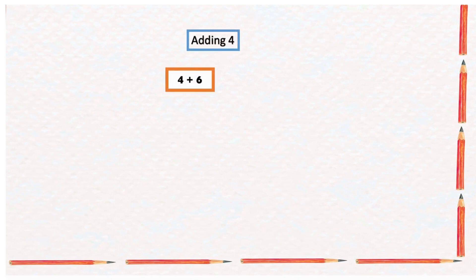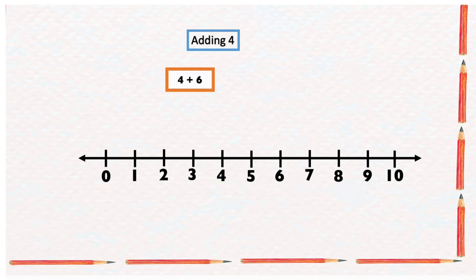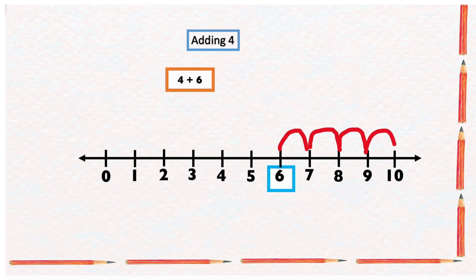Our last example says find the sum of four and six. Using the number line, we can start from number four and count six numbers forward, but instead we can start from the bigger number, which is six, and count four numbers forward: one, two, three, four. Our arrow ended at ten, which is still the same answer — four plus six gives us ten.